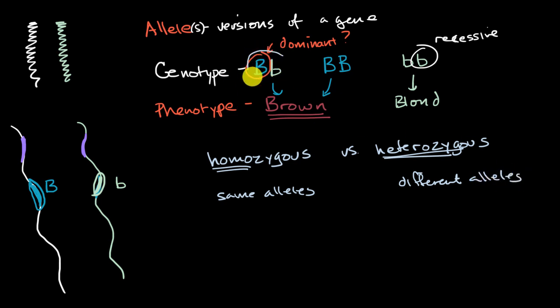So what would we call this scenario right over here? We would call this a heterozygous genotype for this gene. This would be homozygous dominant, we have two of the same dominant allele. And this would be homozygous recessive. I'll leave you there. You're now armed to talk a lot about genetics.